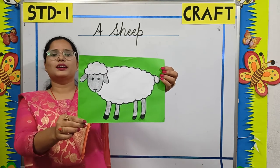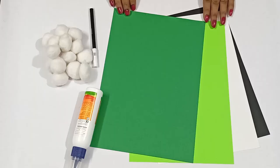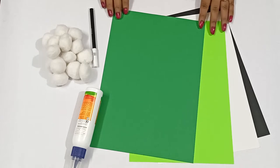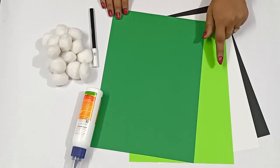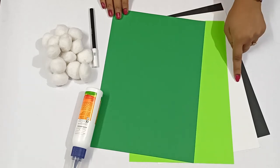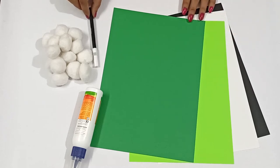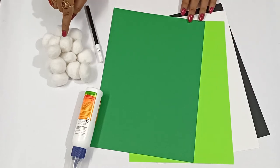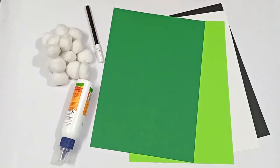So come, let's learn how to make a sheep. Materials required to make this craft are: craft paper — dark green craft paper, light green craft paper, white craft paper, and black craft paper — black sketch pen, a few cotton balls, and fevicol.